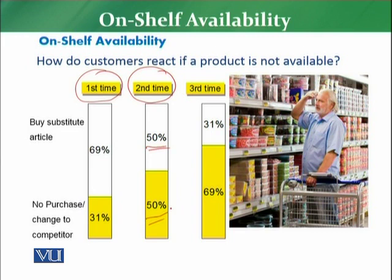The customer will be changing to the competition side. The third time, if the customer has visited a particular retail store and still that particular product or maybe some other product is not available, there are only 31% chances that the customer will buy a substitute article. However, 69% of cases, the customer will not purchase or will be changing to a competitor.